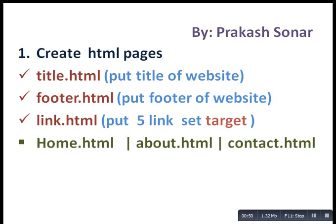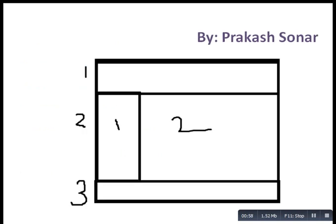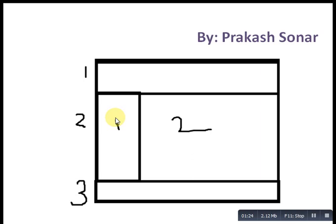Now create your frame.html. Here is our basic layout. We are going to divide our frame.html page into 3 rows. In the first row we are going to put title.html. In the second row we are going to divide that row into two columns — in one column we put link.html with at least 5 links, and after clicking a link it will open in the second column. The third row is where we are going to put footer.